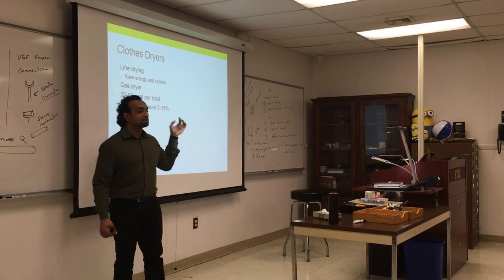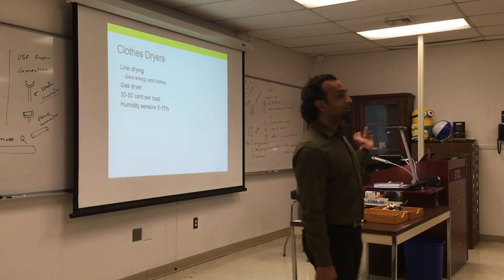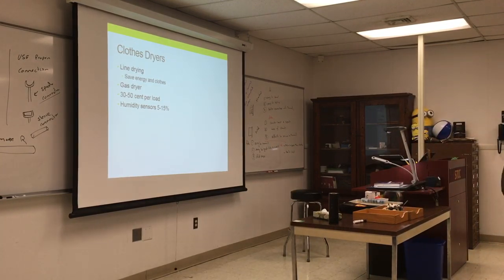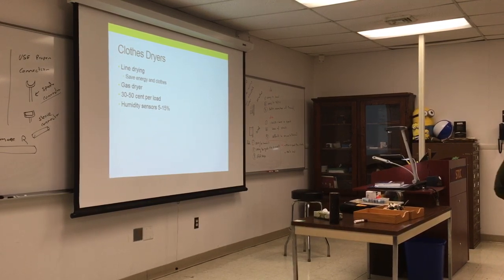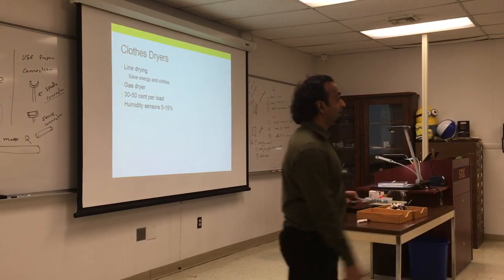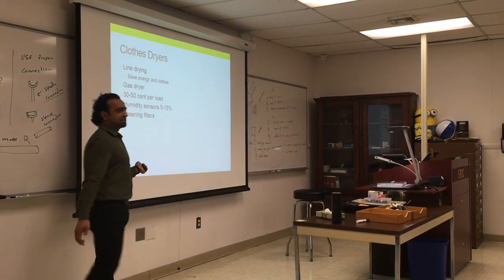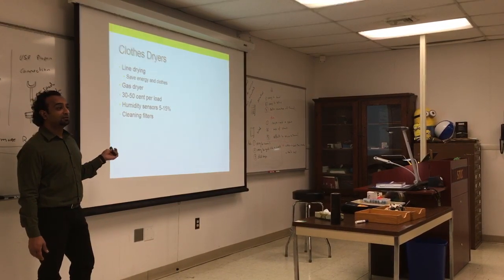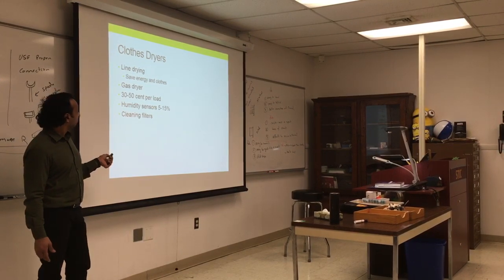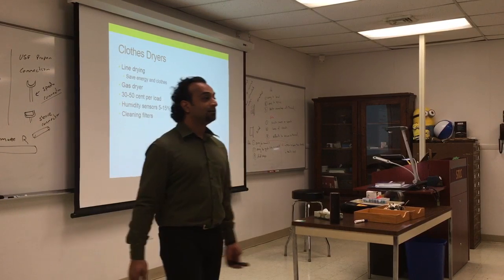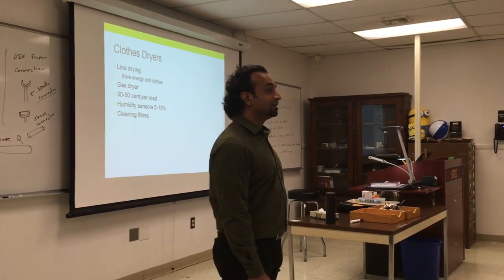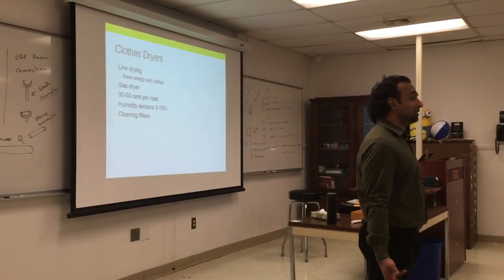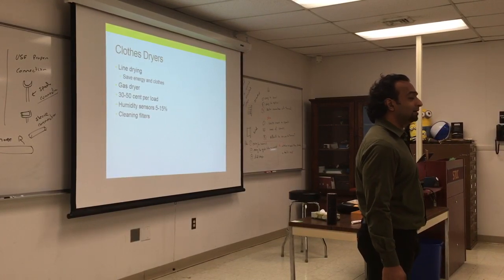New dryer models have a humidity sensor so they don't run longer than needed — that's one of the best options you can get in a dryer. If you set it for an hour and a half but the clothes are dry at 45 minutes, it stops. Once it's dry, it's dry — running longer just tumbles the clothes more and produces more lint. Cleaning the lint filter is also really important to maintain drying efficiency; often people forget and the filter is completely full.